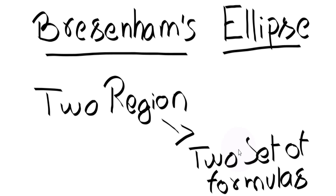Welcome to Code Entrust. Hi and welcome to the third video. In this video we're going to discuss about Bresenham's ellipse. Ellipse has a little bit more explanation since it has two regions, and you will understand why there are two regions — that is, two sets of formulas that we need to consider for ellipse.